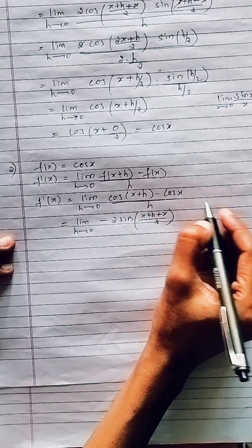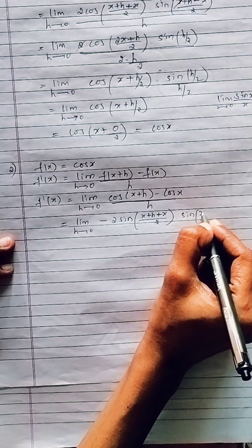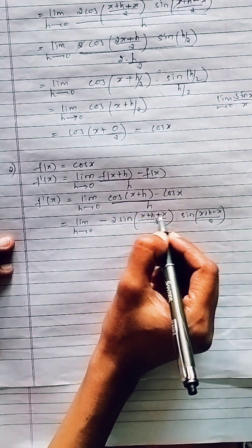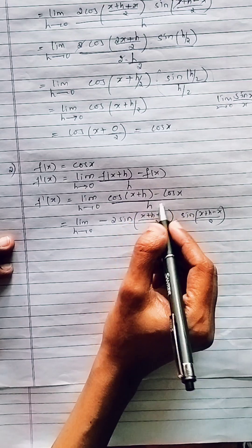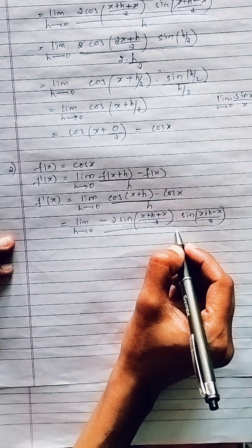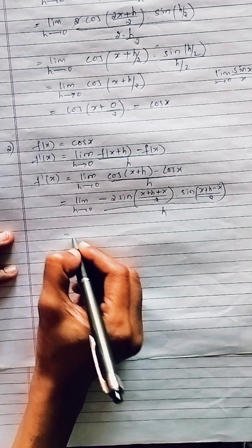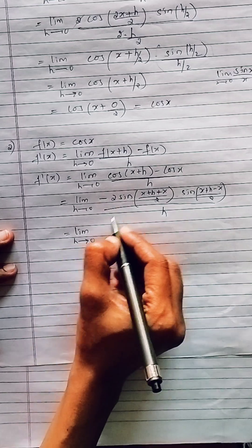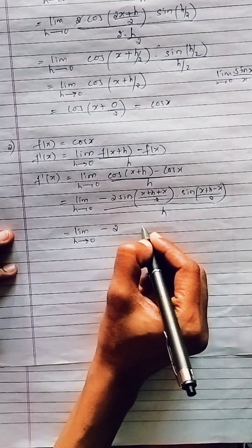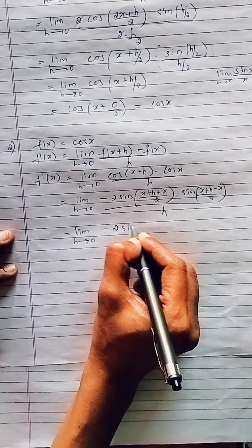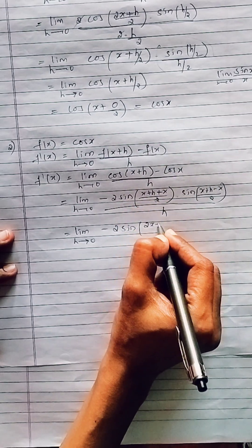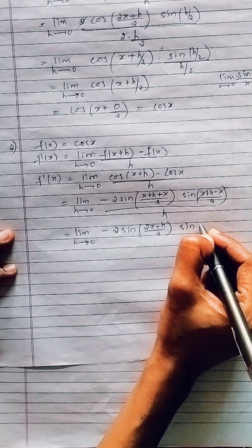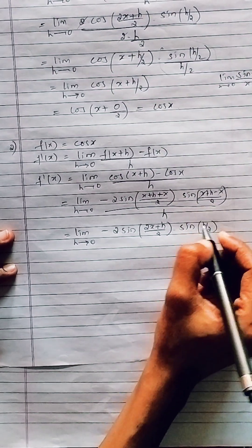We apply the formula for cos A minus cos B: it equals minus 2 sin((A+B)/2) into sin((A-B)/2). So the numerator becomes minus 2 sin((x+h+x)/2) into sin((x+h-x)/2), which simplifies to minus 2 sin((2x+h)/2) into sin(h/2), whole divided by h.